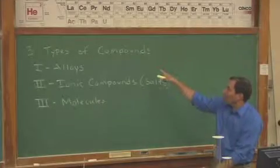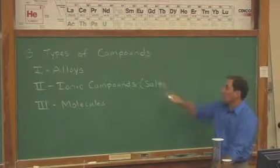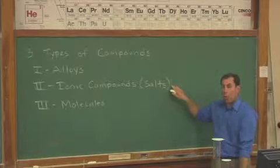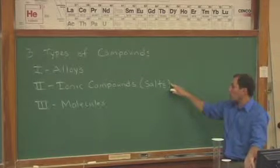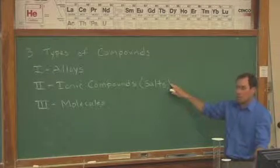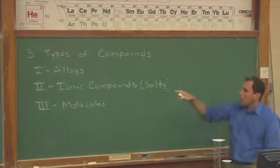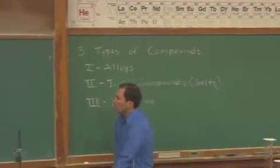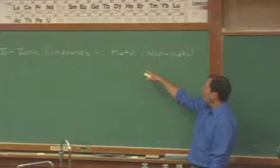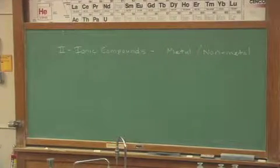Hi. We're taking a look at the three types of compounds. We've looked at alloys, so now we'll look at ionic compounds, or a nickname for ionic compounds is salts. You can imagine that table salt fits into this category. I made a note on this side of the board. I wrote that ionic compounds are metal, nonmetal combinations.